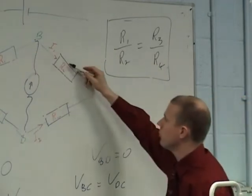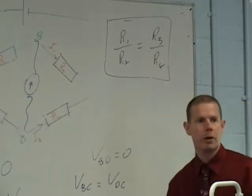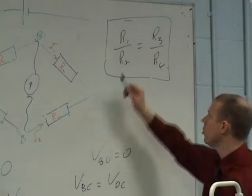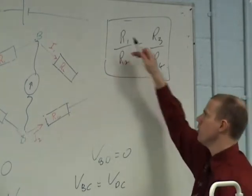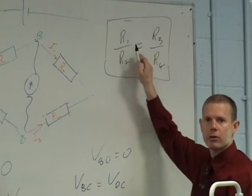Okay, so you've got to have r1 r2 on top, r3 r4 on the bottom, and you will be given an unknown resistor. You will be told one of those guys is unknown. Use the formula to find the right resistor.